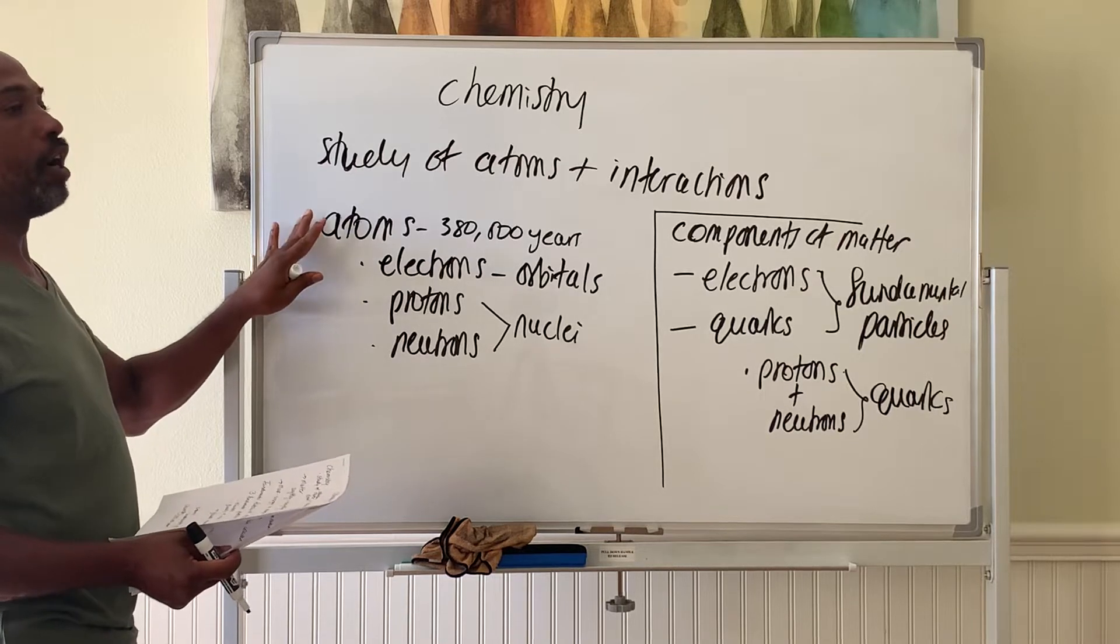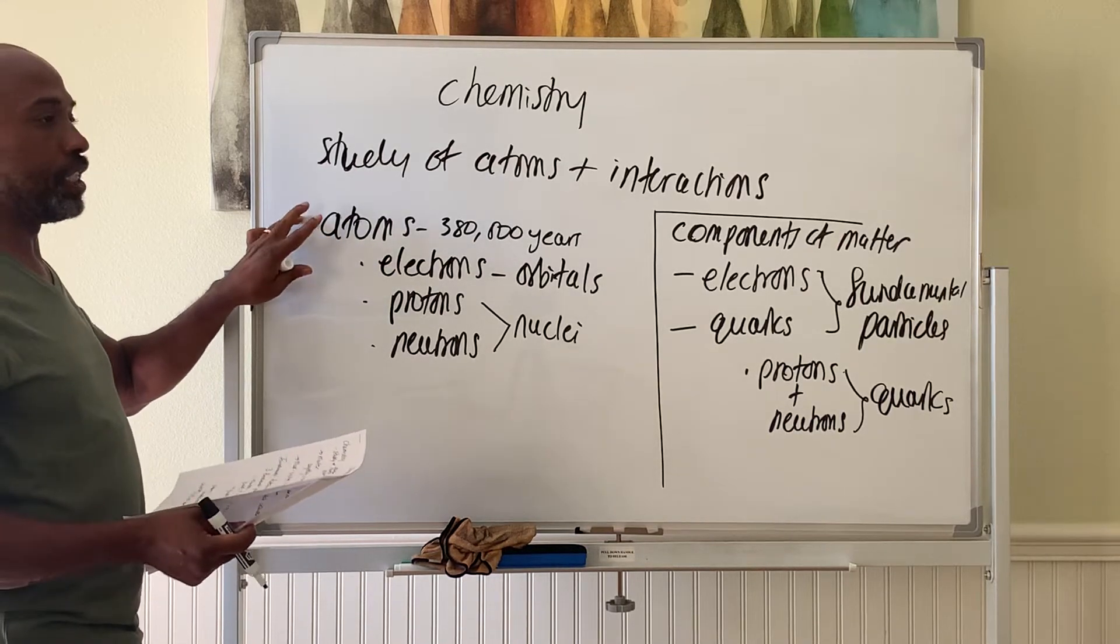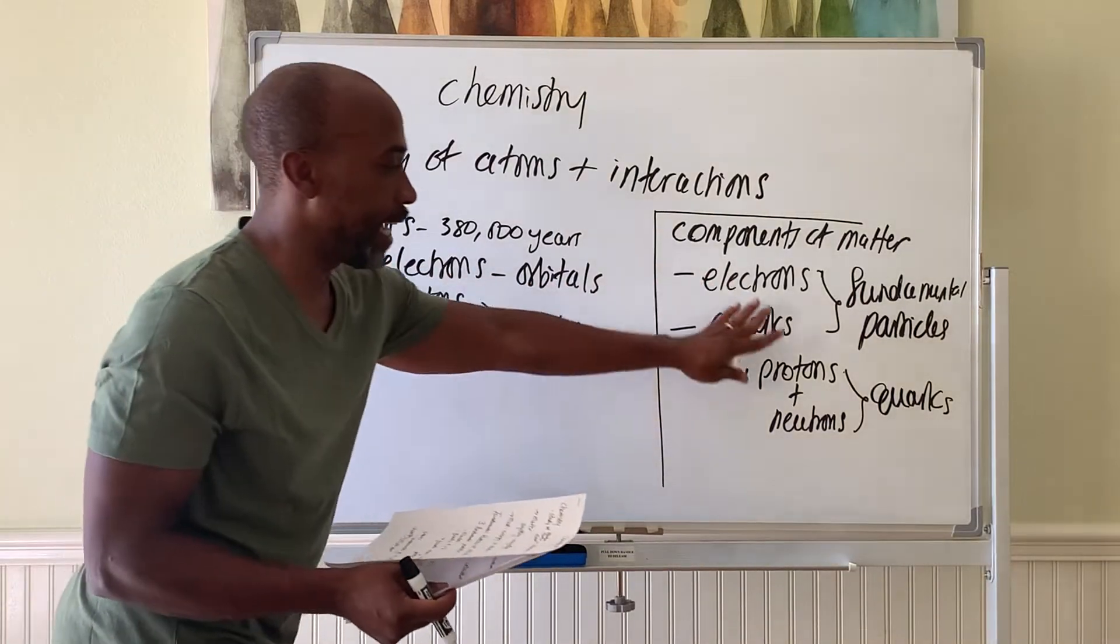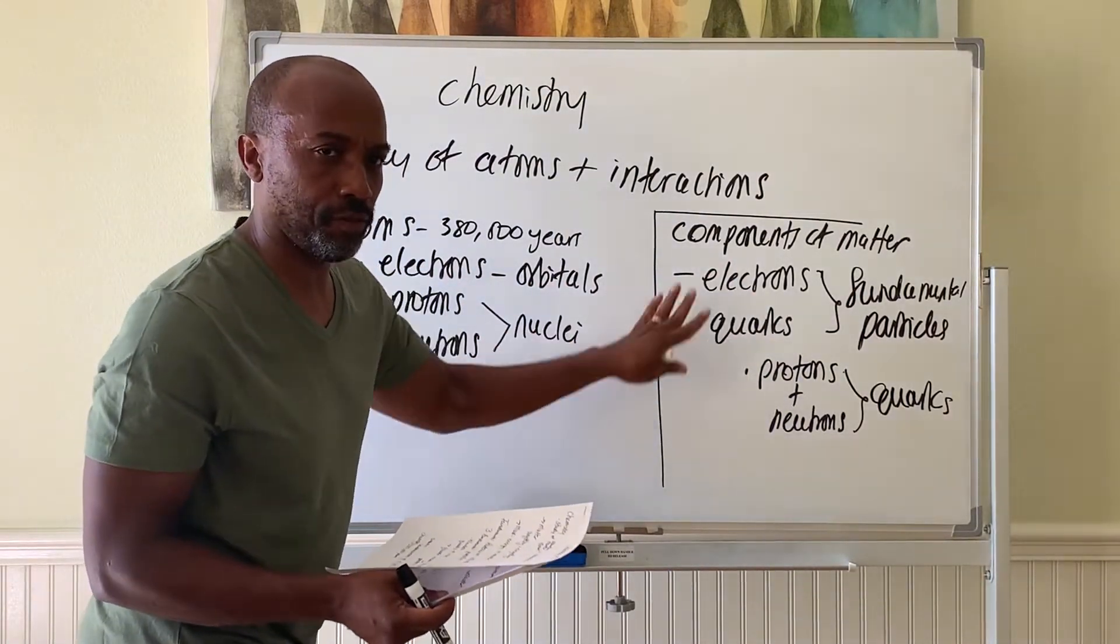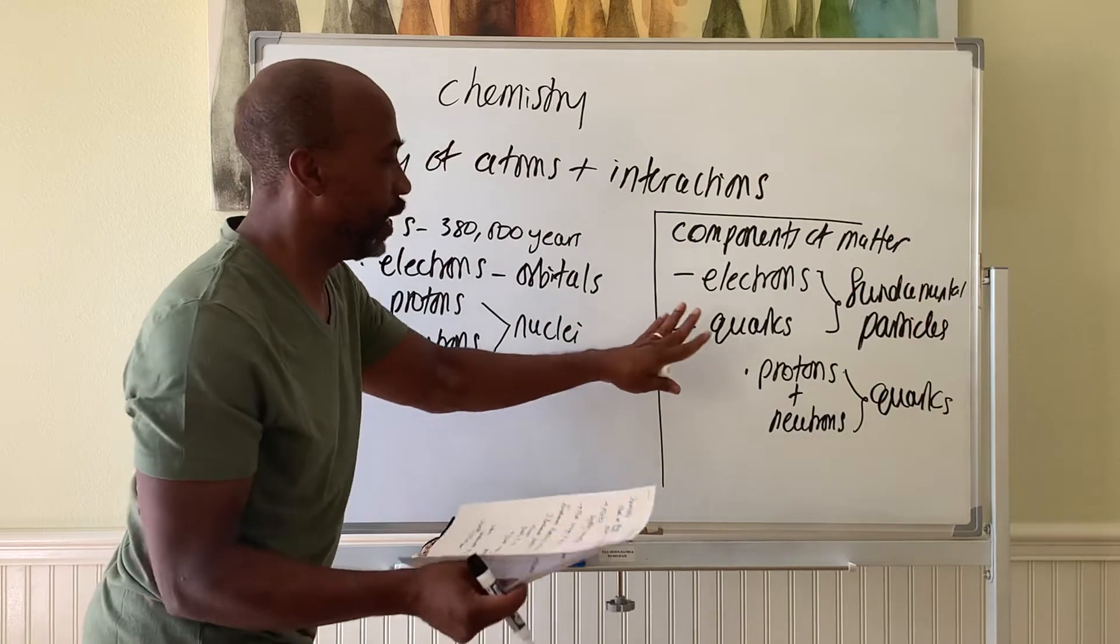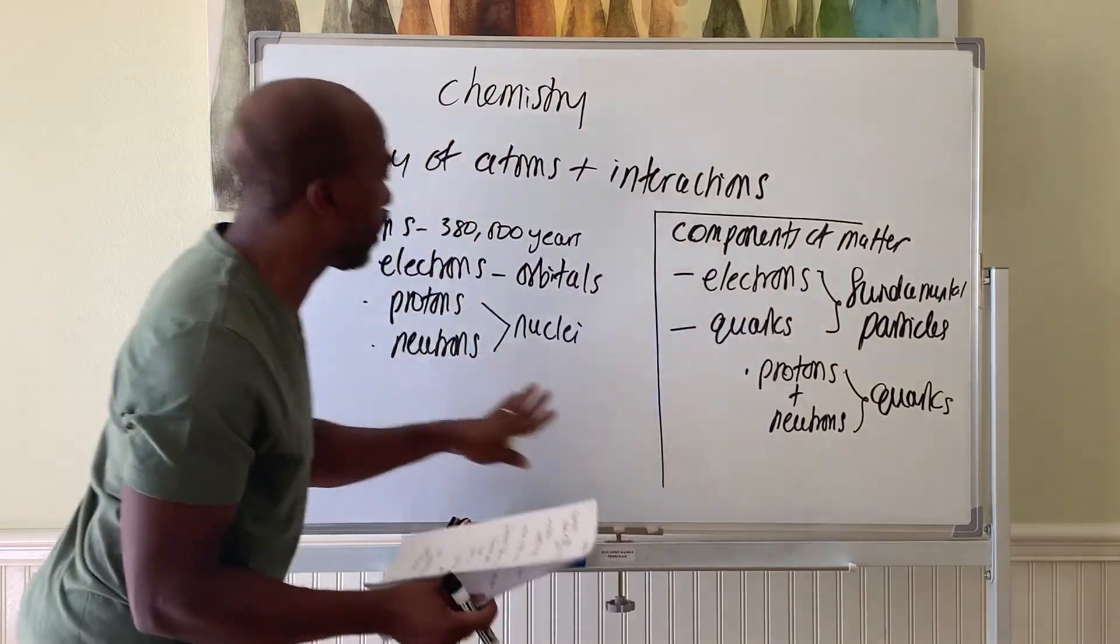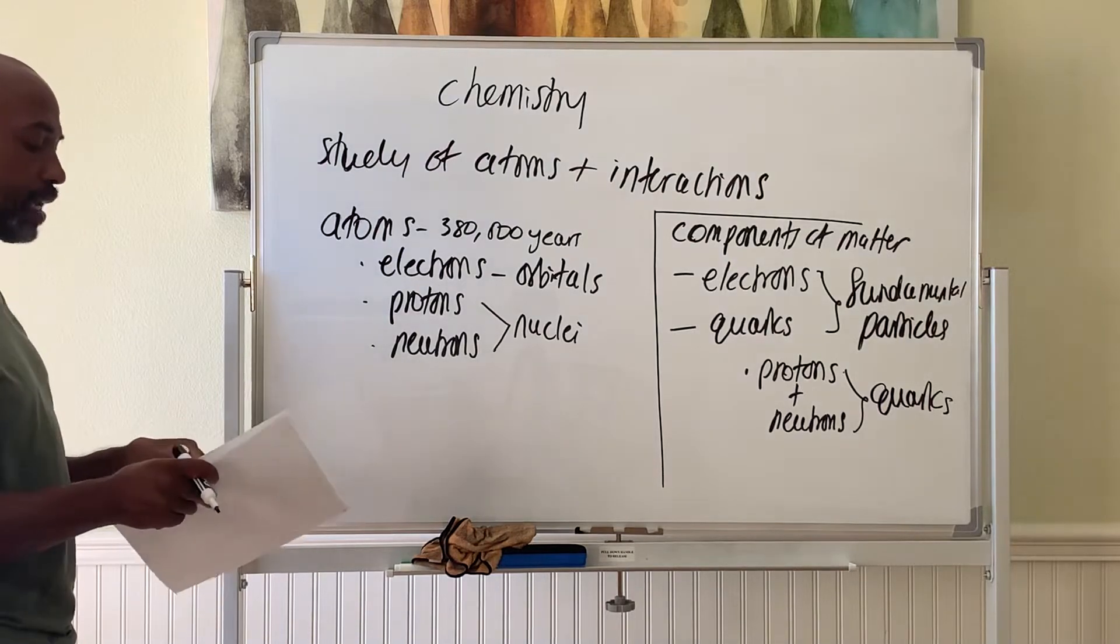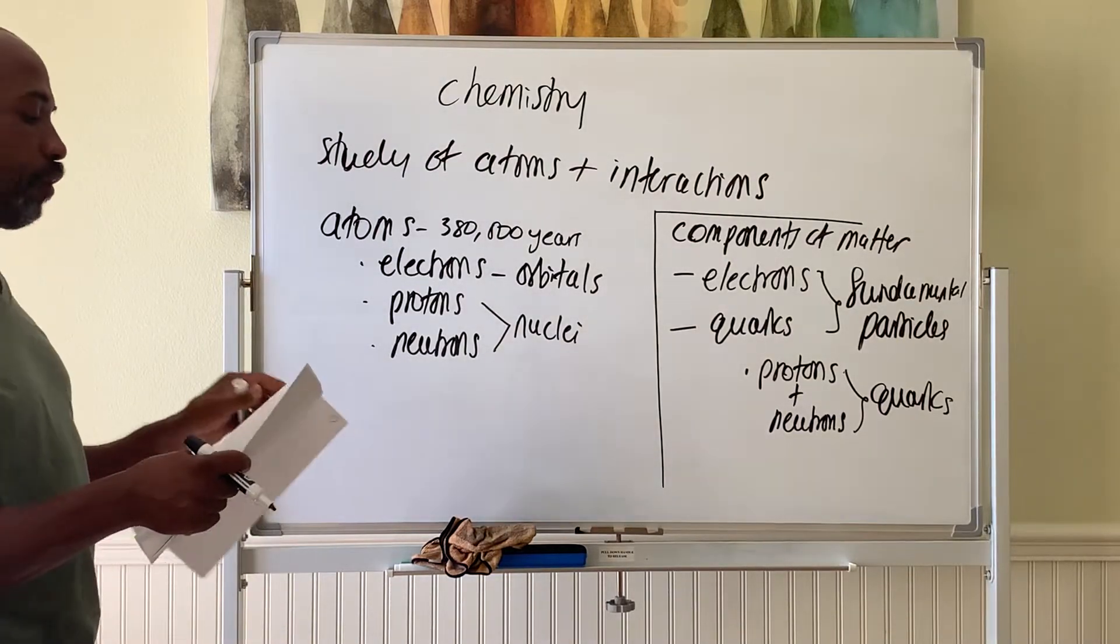Once we get to this level of combination, chemistry starts here. Before, these smaller things are more physics. Once we get to this level of atoms, now we can get into the chemistry part of all of this.